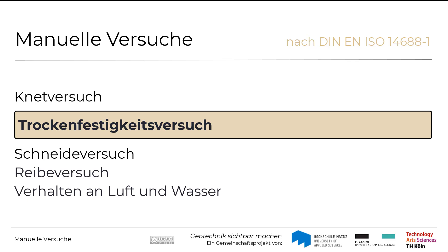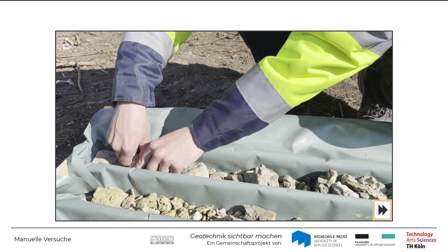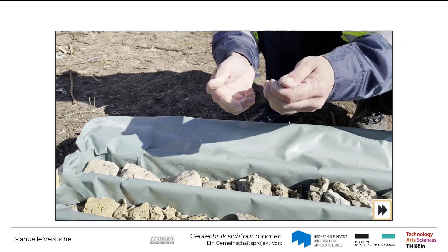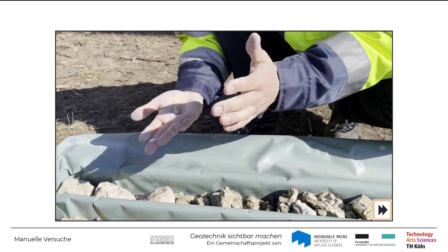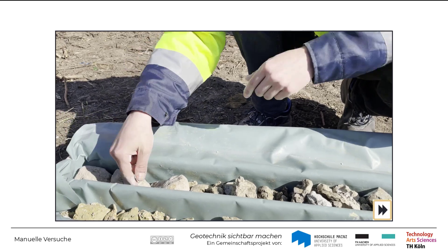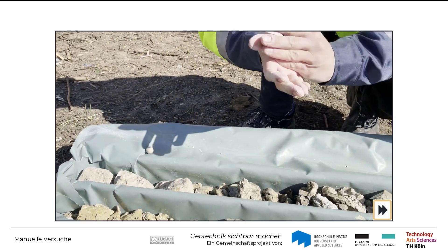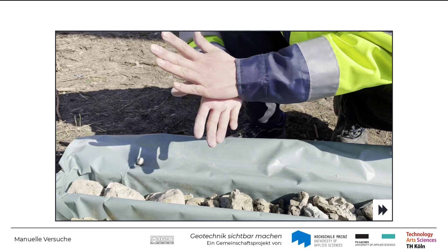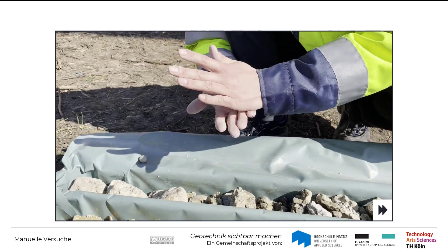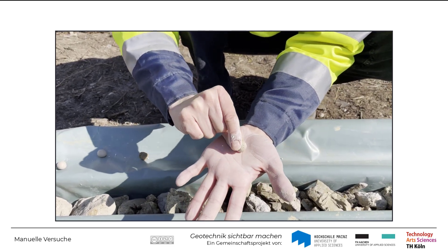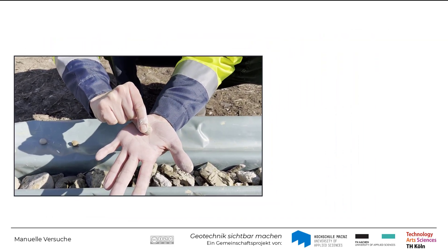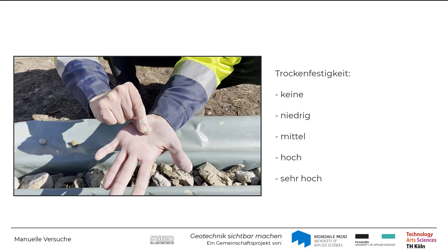In der folgenden Videosequenz wird der Versuch zur Bestimmung der Trockenfestigkeit gezeigt. Die Trockenfestigkeit kann anhand des Widerstands der getrockneten Probe gegen Zerbröckeln und Pulverisieren durch die Finger eingeschätzt werden. Hierzu werden mehrere Kugeln mit einem Durchmesser von 12 mm geformt und durch Luft, Sonne oder im Ofen getrocknet. Die getrockneten Kugeln werden dann zwischen den Fingern zerdrückt. Die Trockenfestigkeit wird mit folgenden Begriffen beschrieben: keine, niedrig, mittel, hoch oder sehr hoch.